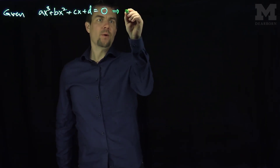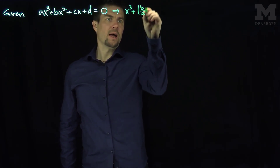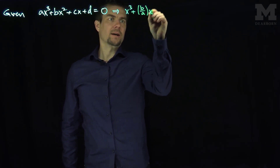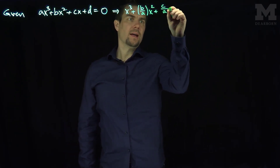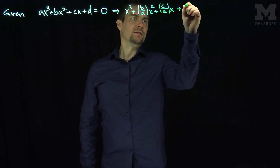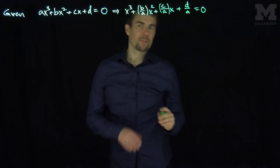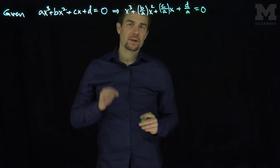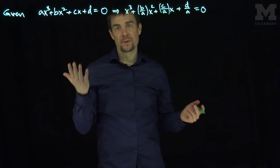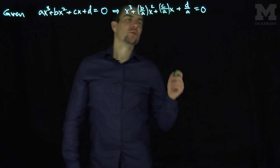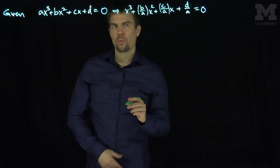So if we divide through by a, we'll get x³ + (b/a)x² + (c/a)x + d/a = 0. So if the lead coefficient is not equal to one, divide by it. If it's equal to zero, it's a quadratic equation and you can solve that. We'll consider cubic equations whose lead coefficient of x³ is equal to one.